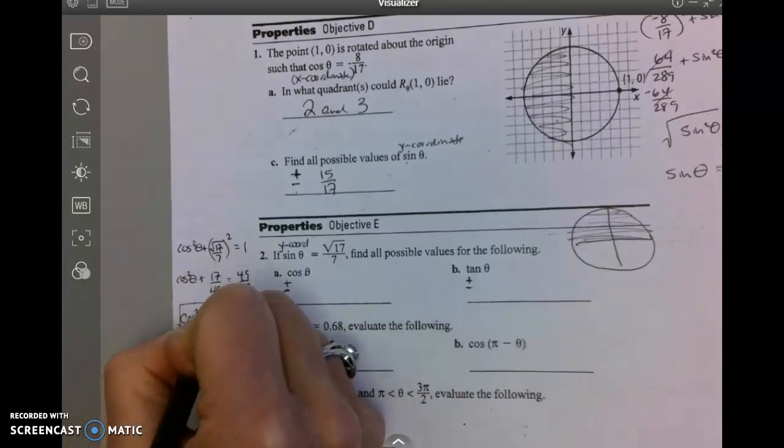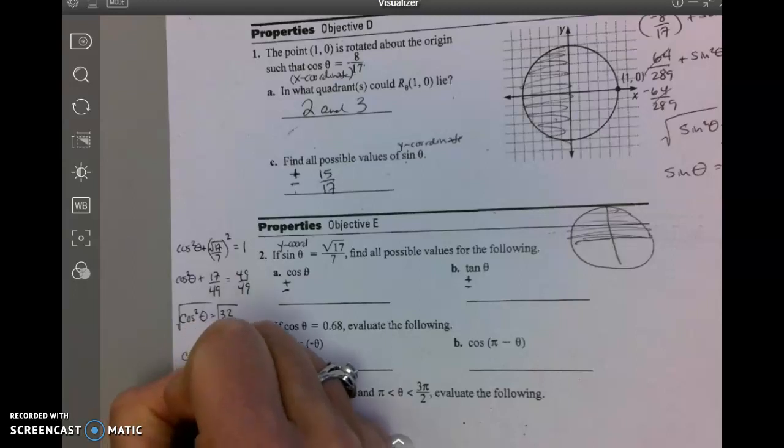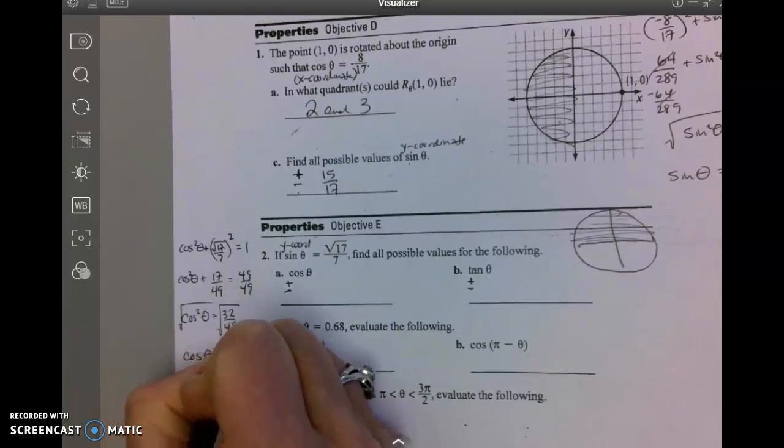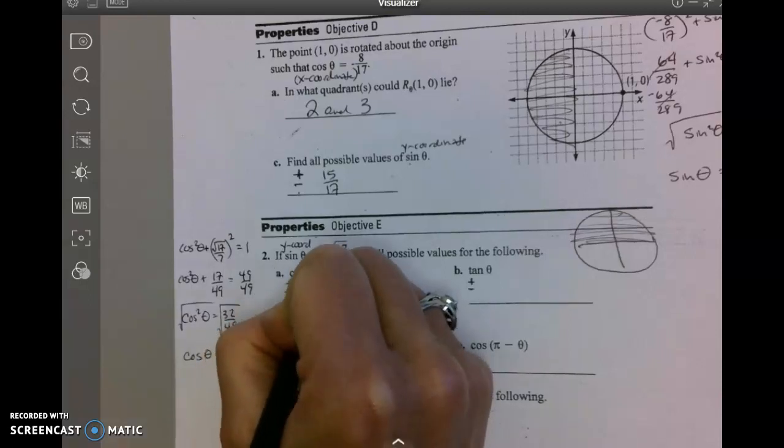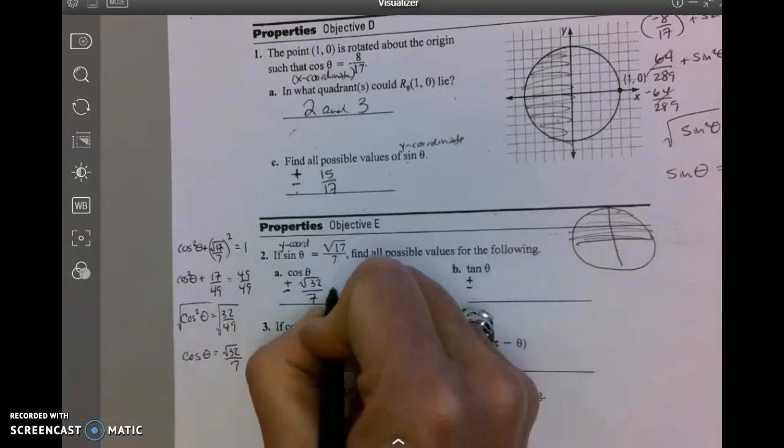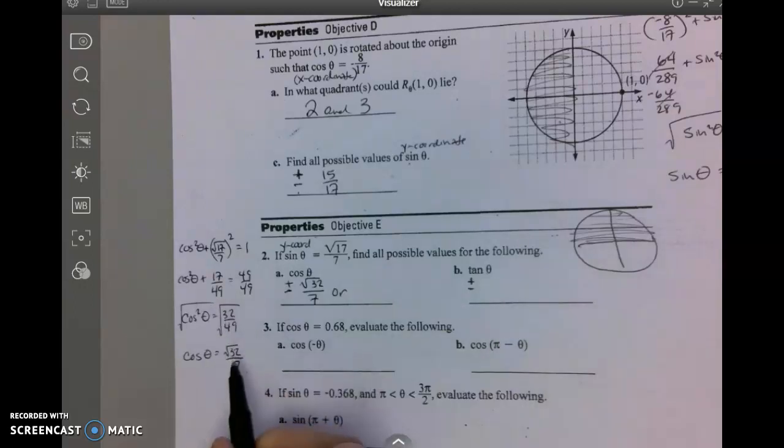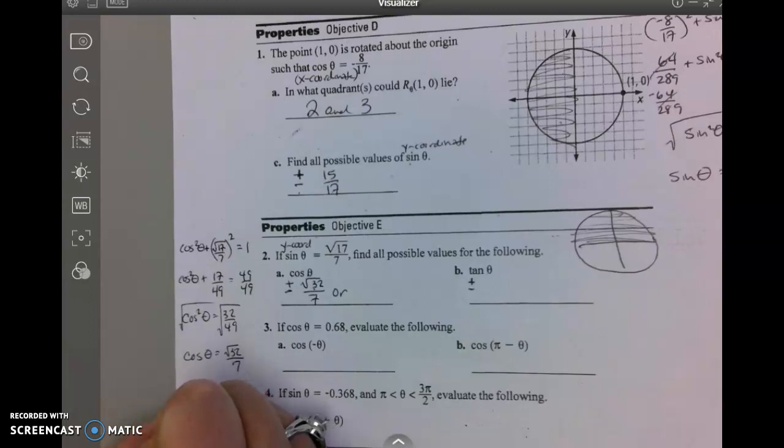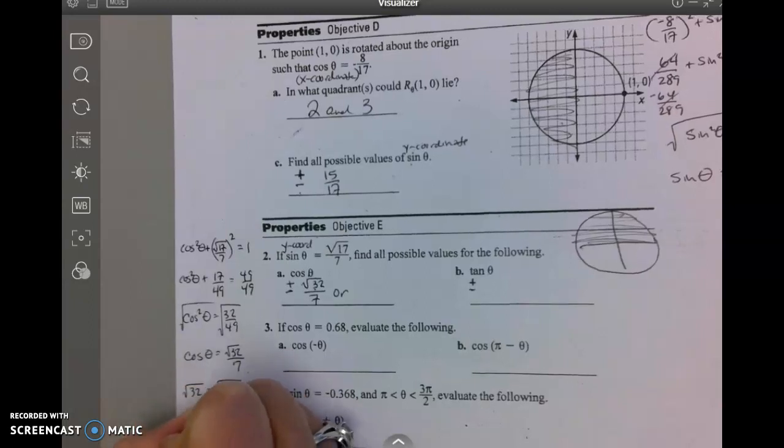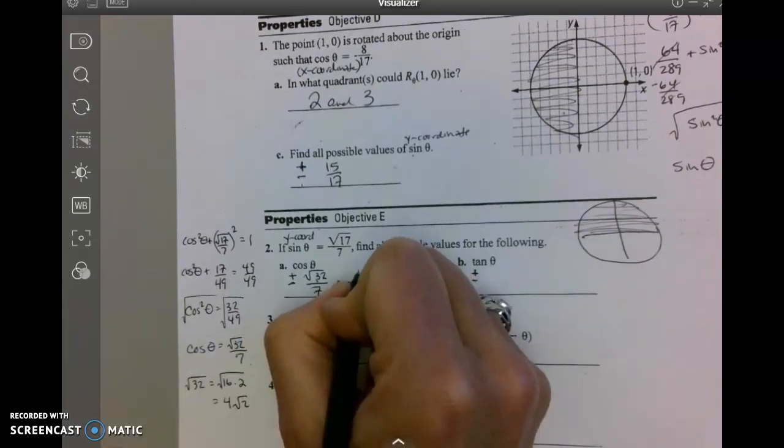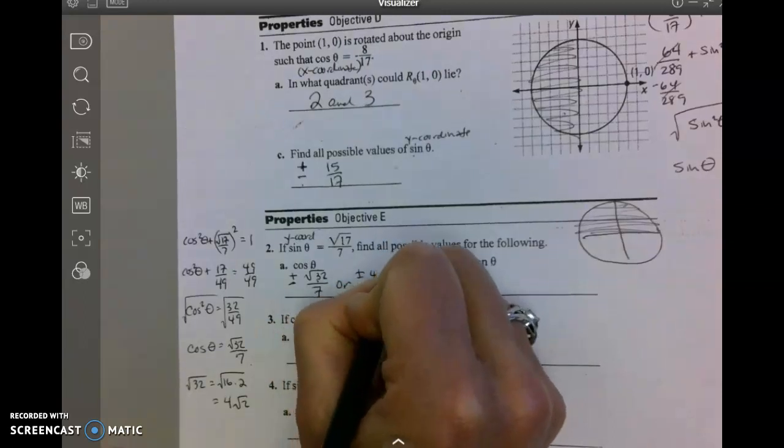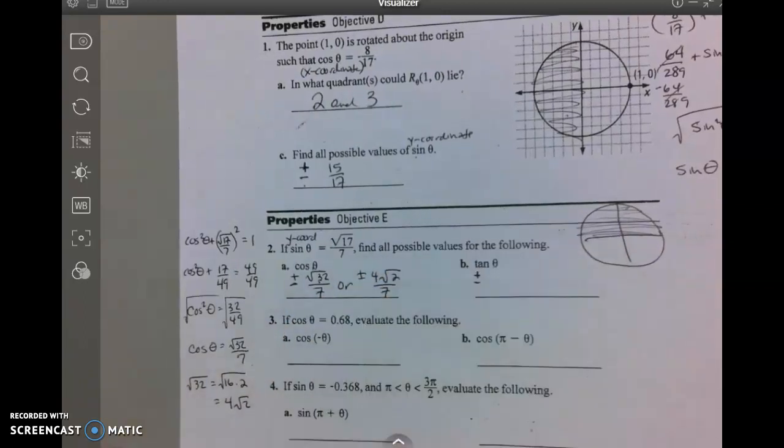And I take the square root. Cosine of theta equals the square root of 32 over 7. Or, the best answer would be to reduce this square root of 32. The square root of 32 is 16 times 2. 16 is a perfect square, so 4√2. So plus or minus 4√2/7.